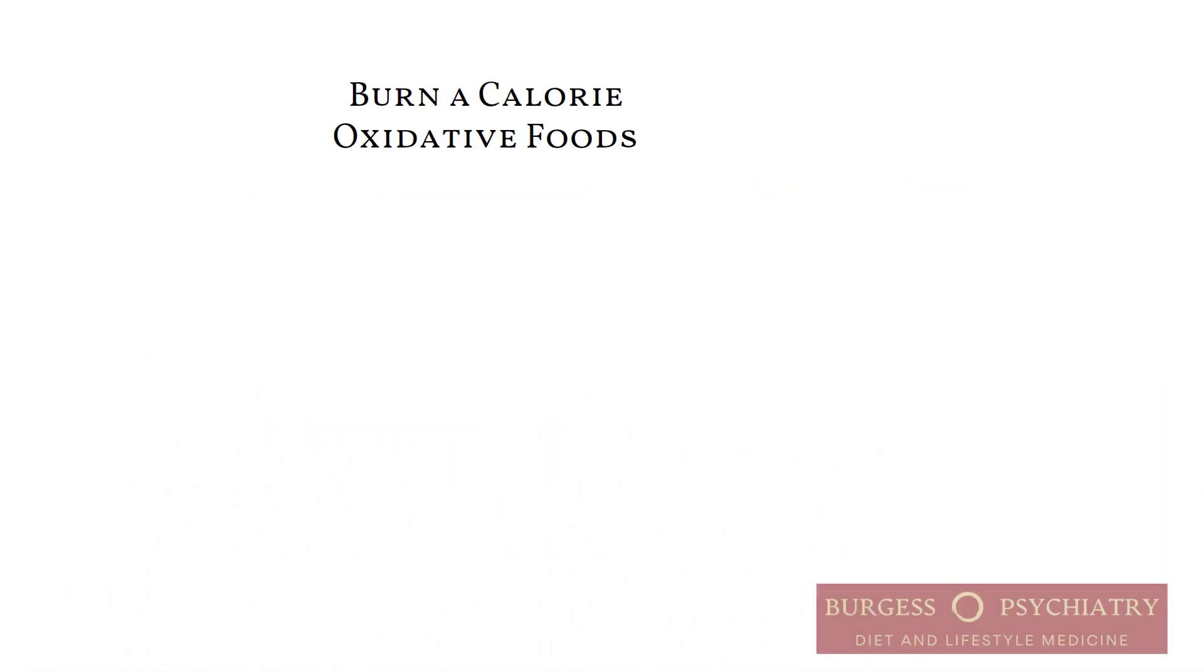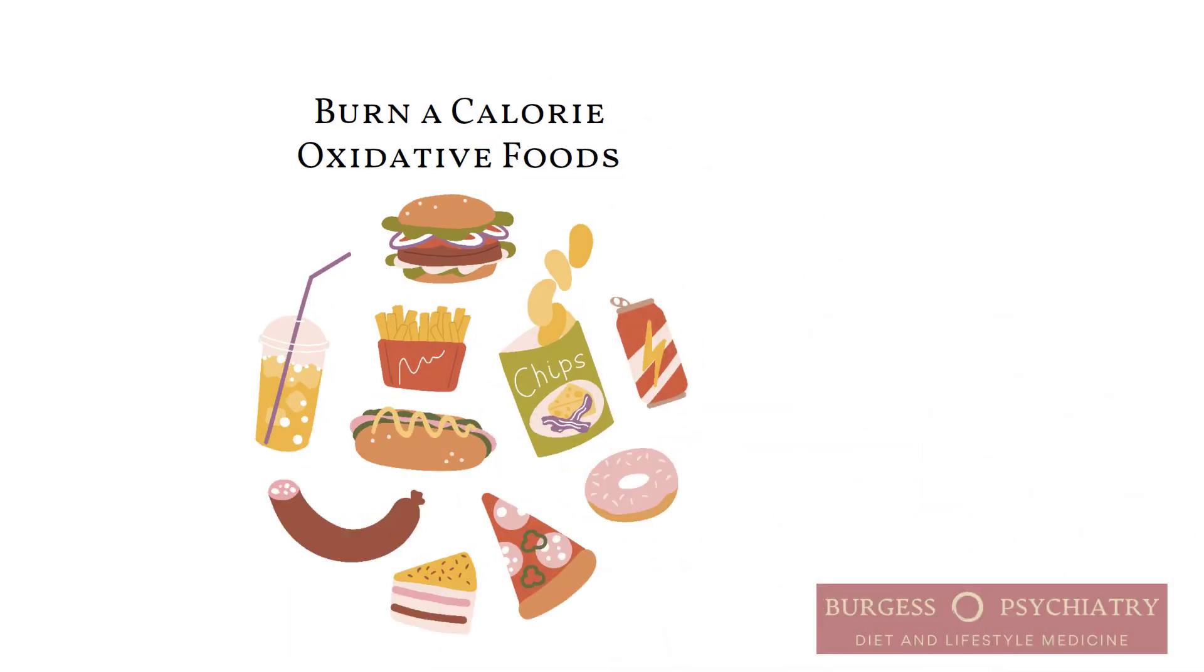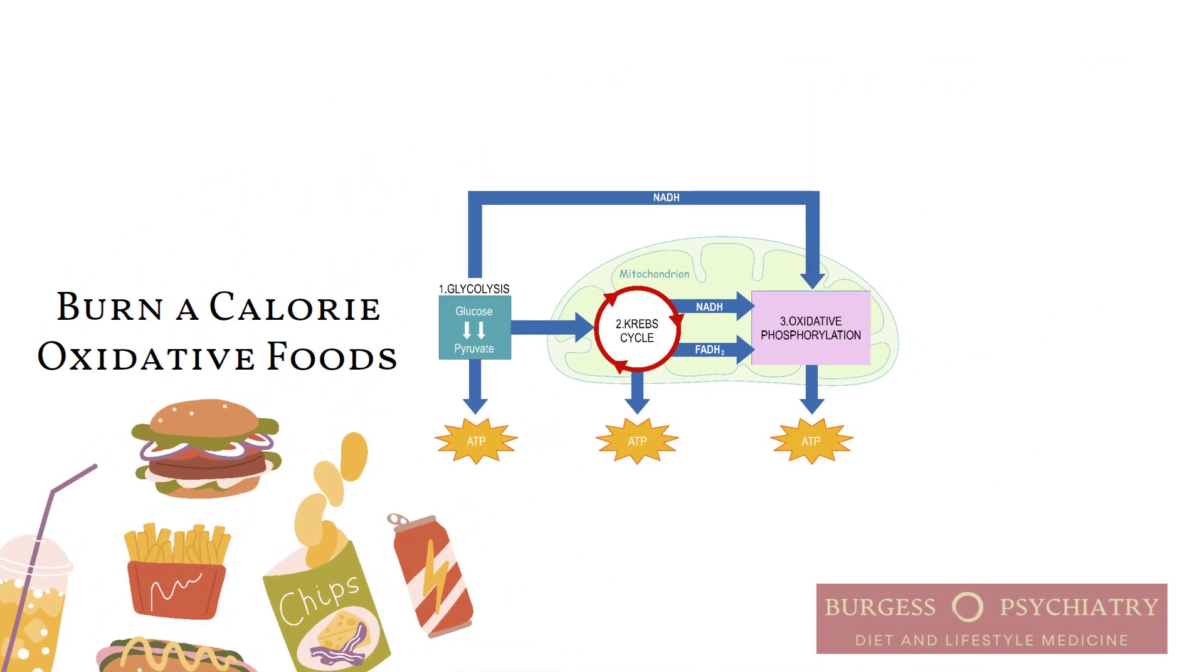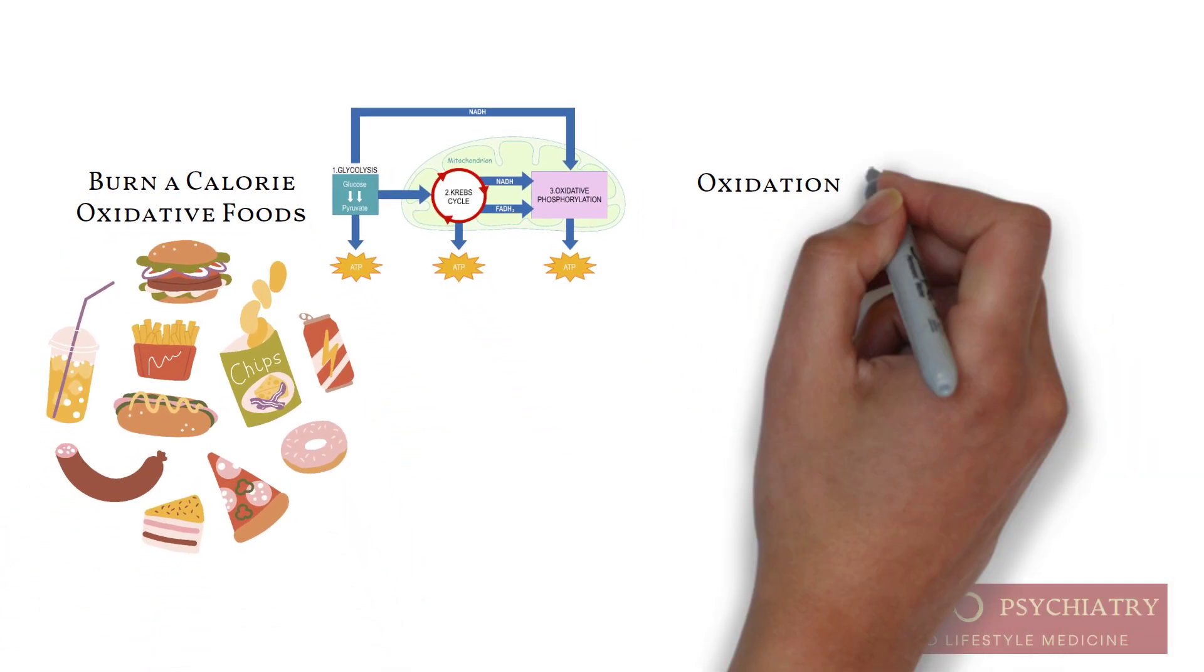Anytime you burn a calorie, whether it's glucose, amino acids, or fatty acids, it's an oxidative process. You start with glycolysis, you move on to the Krebs cycle, and then it's oxidative phosphorylation.